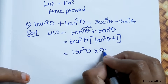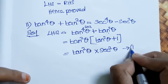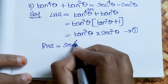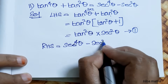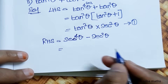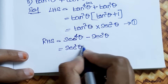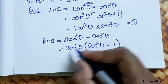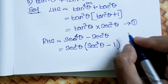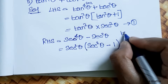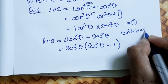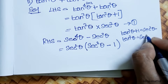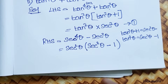We factor: tan²θ(tan²θ + 1) = tan²θ · sec²θ. This is the first result. Now for the RHS: sec⁴θ - sec²θ. Taking sec²θ as common, we get sec²θ(sec²θ - 1). Since sec²θ - 1 = tan²θ, this equals sec²θ · tan²θ. This is the second result.